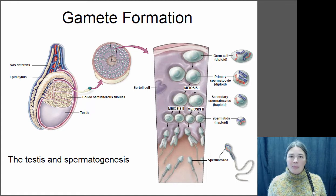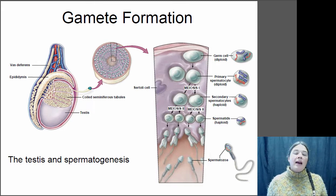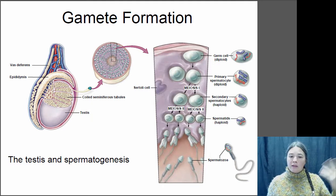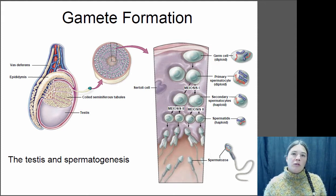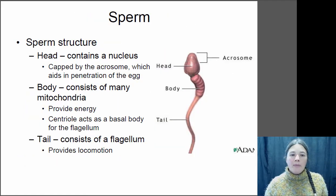Males are constantly making sperm. Sperm are very inexpensive — really cheap to make — and it's generally beneficial to have a big supply of them. Males continuously make sperm in pretty much every species. These stored sperm stay in the epididymis and await their opportunity for ejaculation to occur, for them to go forth and try to find an egg to fertilize.